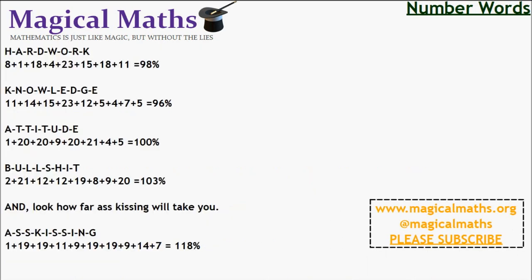One other thing you might want to notice is hard work is 98, knowledge is 96, attitude is 100, bullshit is 103, and look how far arse kissing will take you, 118. So one can only conclude with mathematics that's certain that while hard work and knowledge will get you close, and attitude will get you there, it's the bullshit and arse kissing that will put you just over the top.